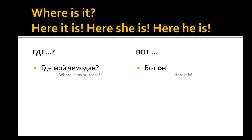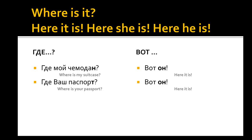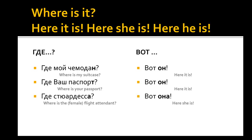Let's look at some other examples. Где ваш паспорт? — Вот он. Где стюардесса? — Вот она. Где моя сумка? — Вот она.